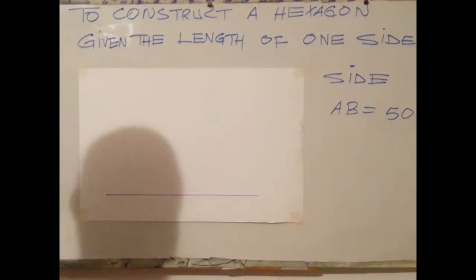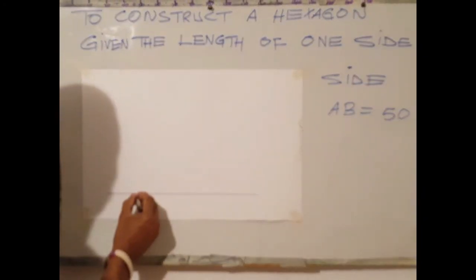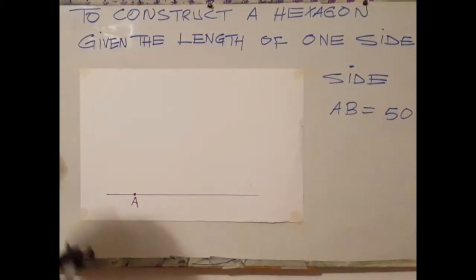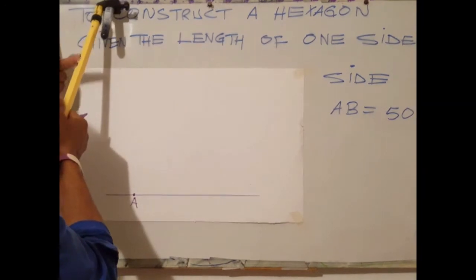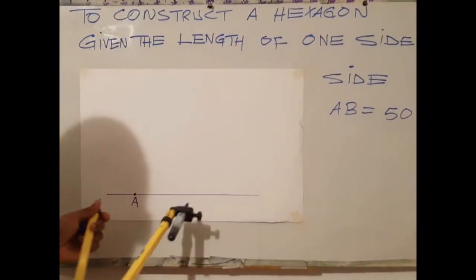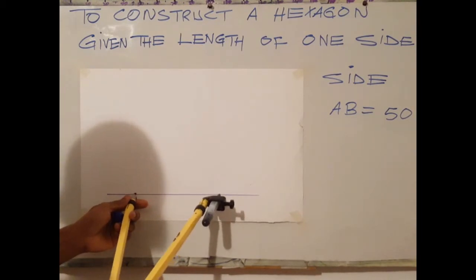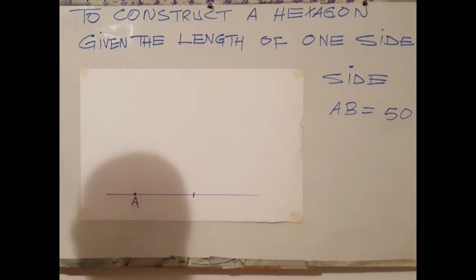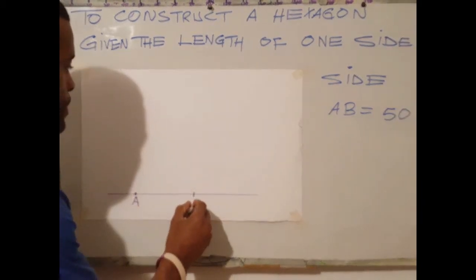From that line, identify point A. From point A, measure 50mm. Point A to 50mm. Label that point B.